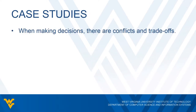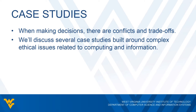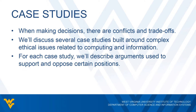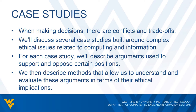Whenever humans make decisions about things that they value, there are conflicts and trade-offs. The scholarly field of ethics has a long history of studying how to identify and resolve such conflicts. We're going to borrow from several classical theories of ethics and discuss several case studies built around complex ethical issues related to computing and information. For each case study, we'll present the issues as well as arguments used to support and oppose certain positions, then describe the methods that allow us to understand and evaluate these arguments in terms of their ethical implications.